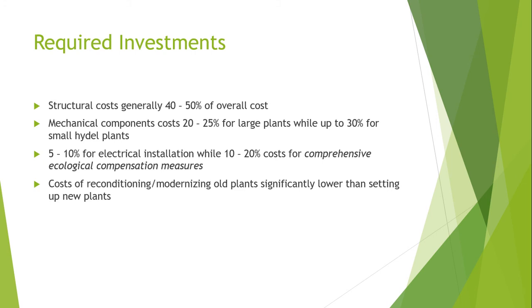The costs are very location dependent, and generally valid guidelines cannot be established. In many cases, the cost for structural components is estimated to be around 40 to 50 percent of the overall cost. The mechanical components like turbines, transmission, and regulatory systems are approximately 20 to 25 percent for larger plants and up to 30 percent for smaller systems.